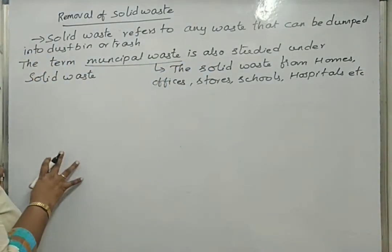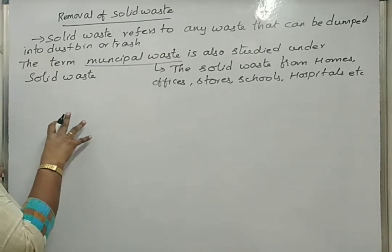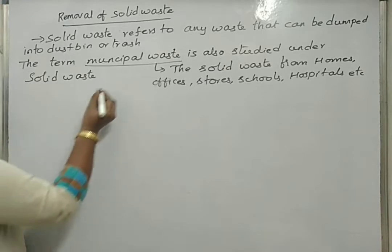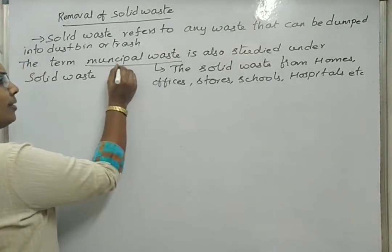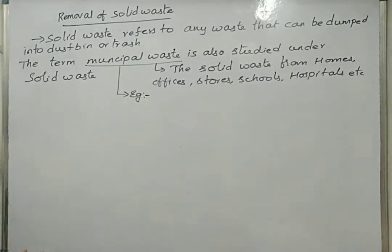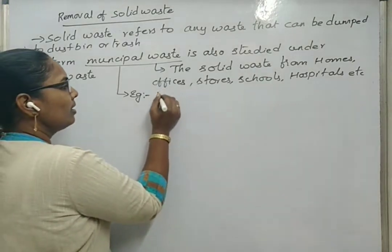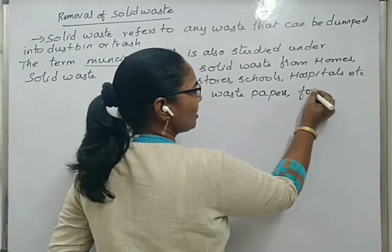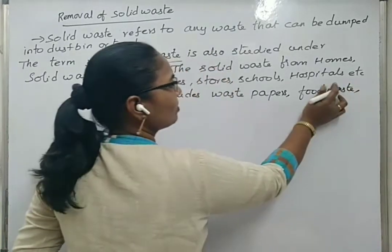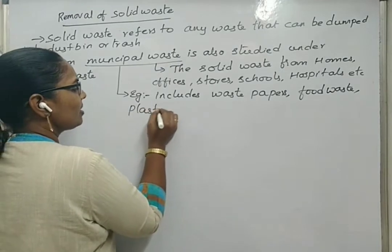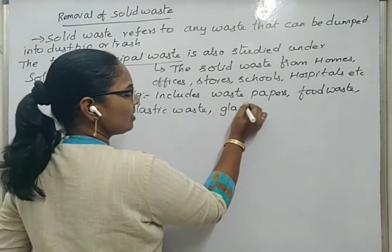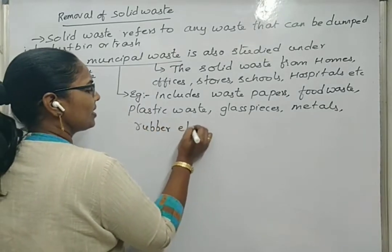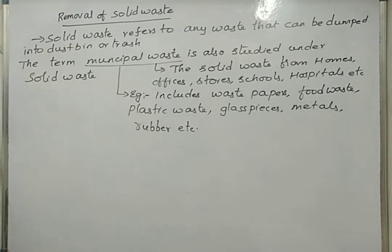For removal of this municipal waste, there are some GHMC remedies. Some people collect this solid waste and dump it in areas where it is openly burnt. The content of municipal waste includes used papers, food waste, plastic waste, glass pieces, metals, rubber, etc. There are many types of solid waste or municipal waste.